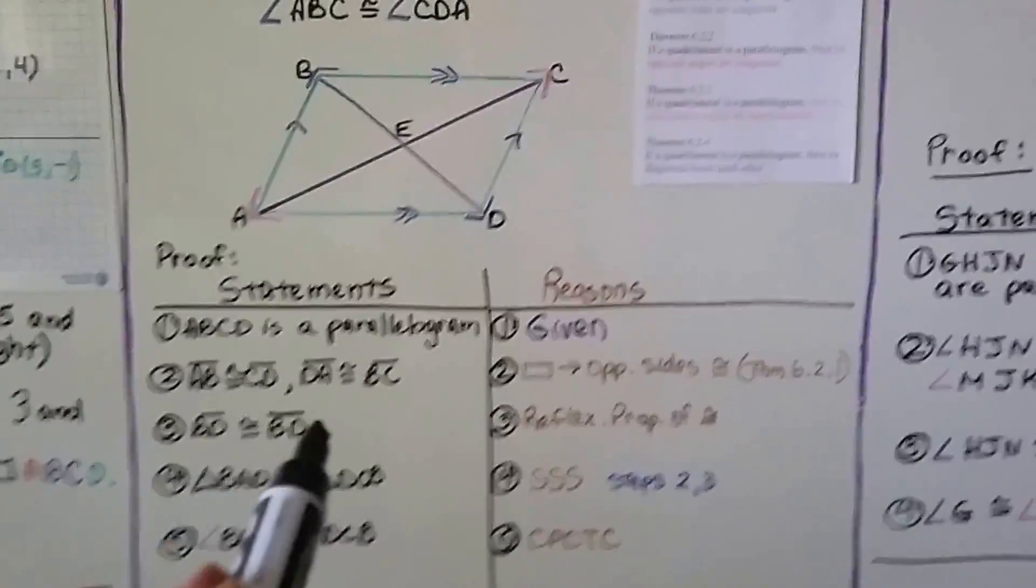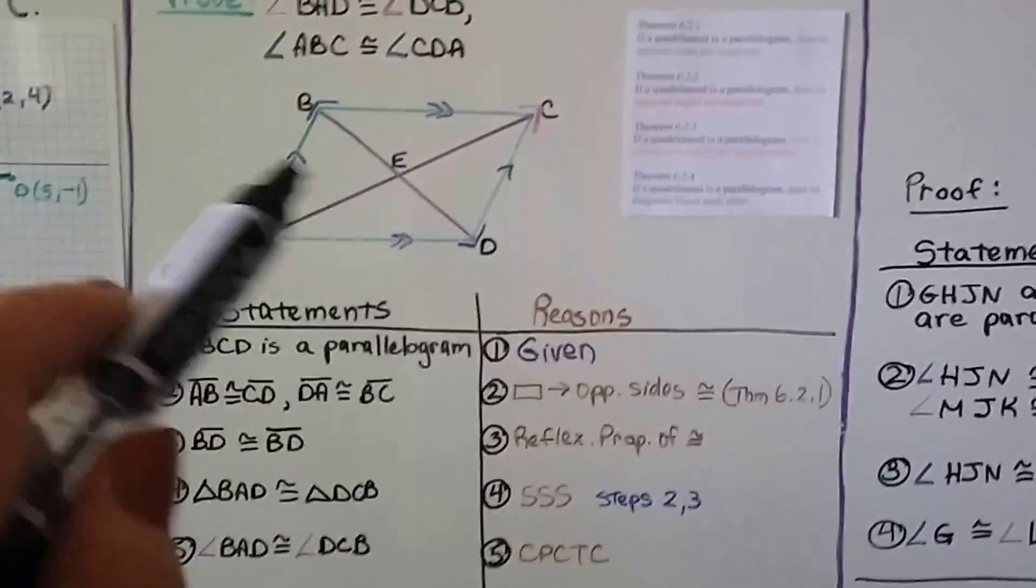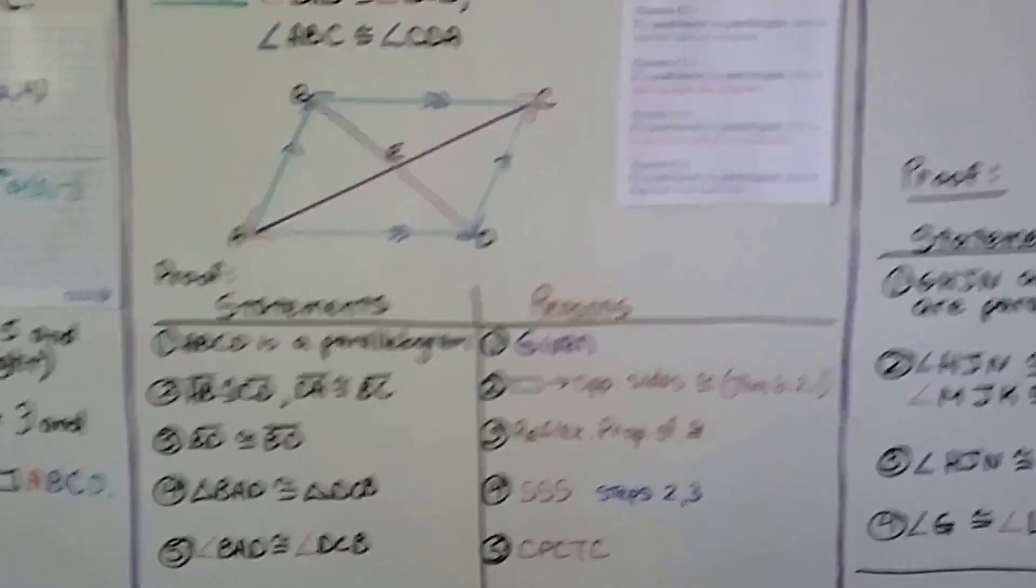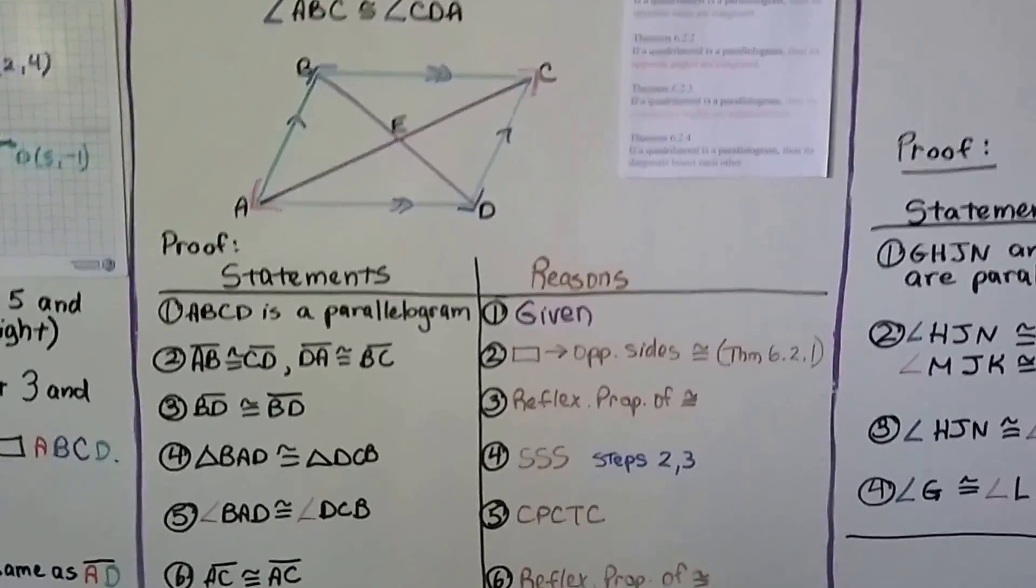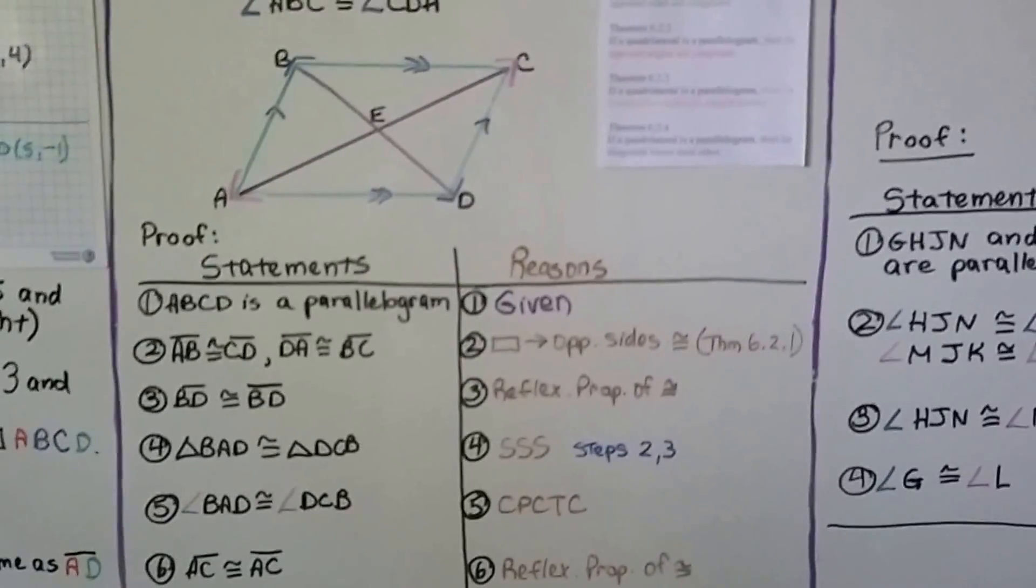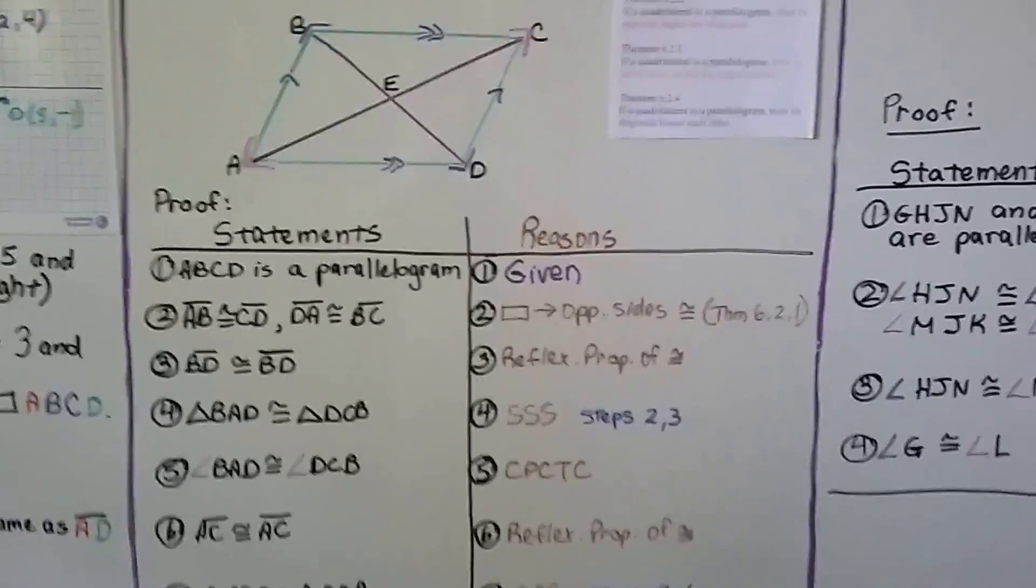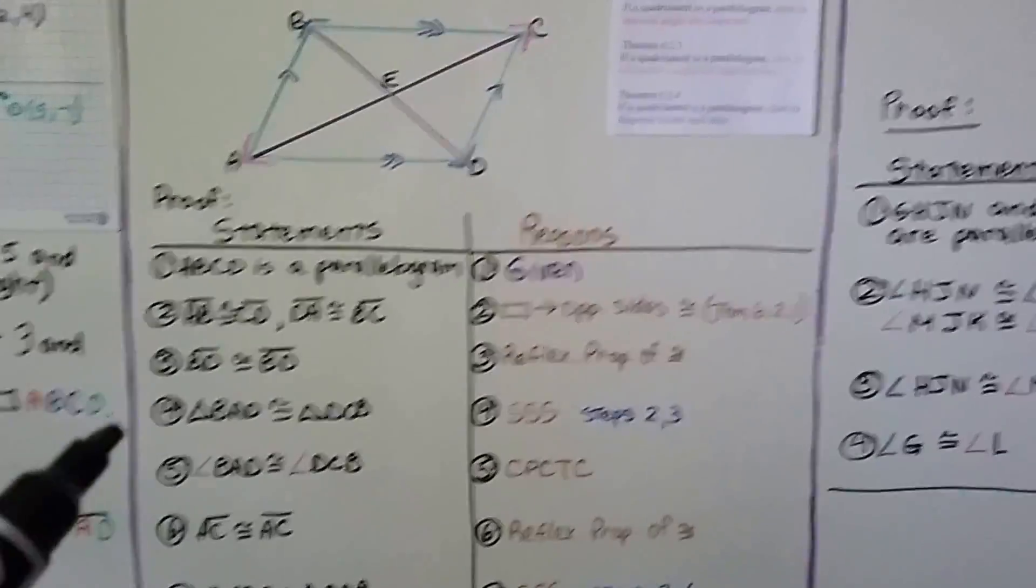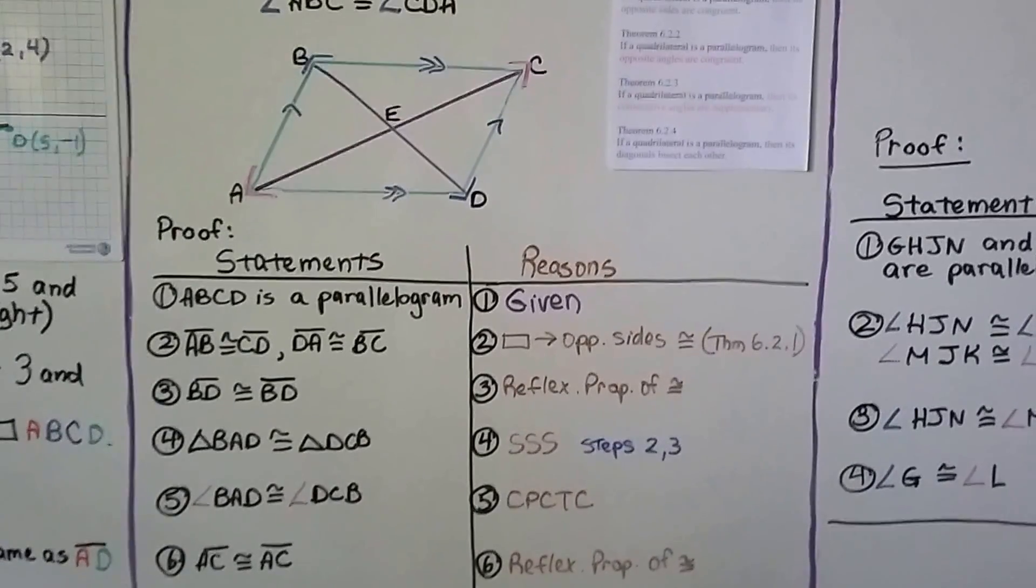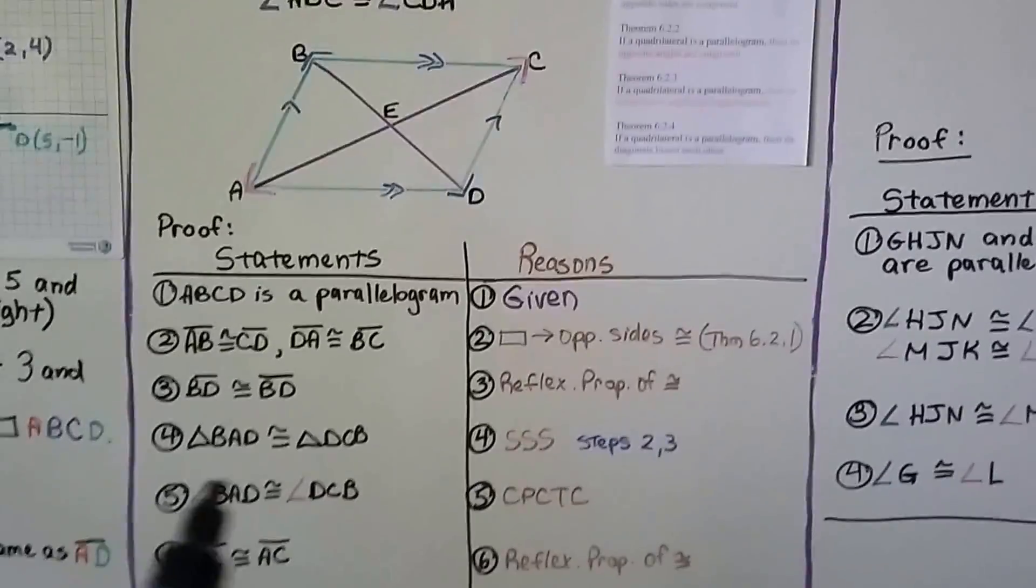Then we have segment BD is congruent to segment BD. So this diagonal is a hypotenuse for this triangle. It's also the hypotenuse for this triangle. And that's the reflexive property of congruence. They share that hypotenuse, so they're congruent. Number 4 says triangle BAD is congruent to triangle DCB. Well, that's from side, side, side from steps 2 and 3. We have a side, side, and a side. Number 5 says angle BAD is congruent to angle DCB. And our reason is CPCTC. Congruent parts of congruent triangles are congruent. It's got three congruent sides, so they're congruent.